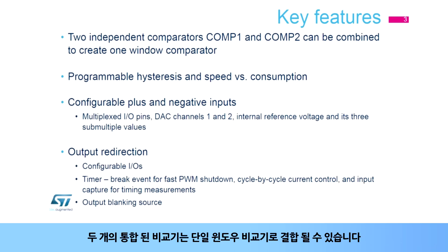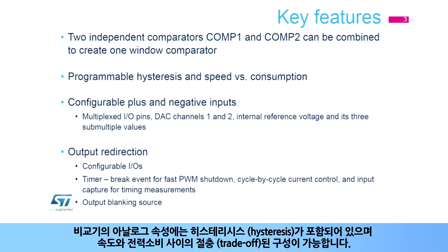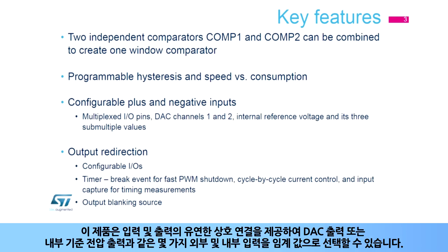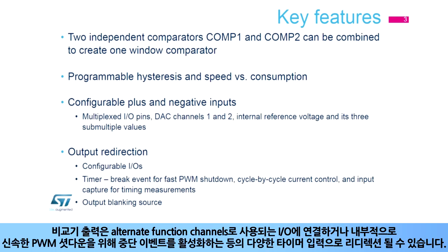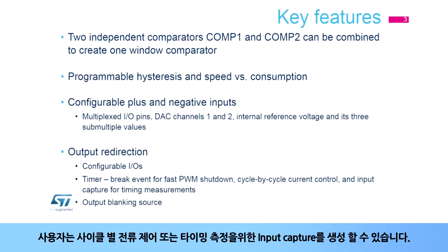The two integrated comparators can be combined into a single window comparator. The analog properties include hysteresis and a trade-off between speed and power consumption, which are configurable. It offers flexible interconnections of inputs and outputs, allowing threshold selection from several external and internal inputs such as DAC outputs or internal reference voltage outputs. The comparator output can be connected to IOs via alternate function channels or internally redirected to timer inputs, enabling brake events for fast PWM shutdown, cycle-by-cycle current control, or input captures for timing measurements.